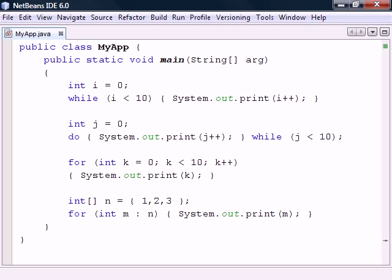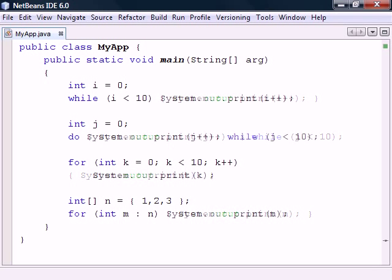These are the four looping structures in Java. Just as the conditional statements, the brackets can be left out if there's only one statement in the code block.